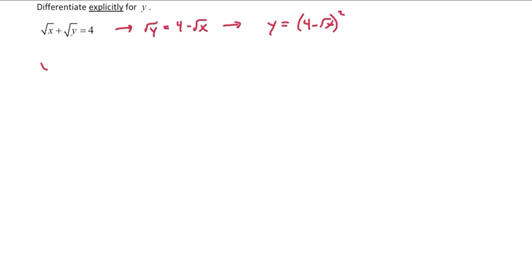From here we can start to find y prime. First we'll use the power rule, 2 comes down, copy the inside, subtract 1 on the exponent and then multiply by the derivative of the inside. The derivative is negative 1 half x to the negative 1 half power.